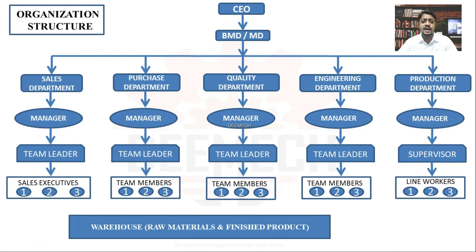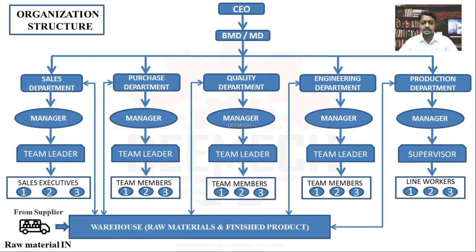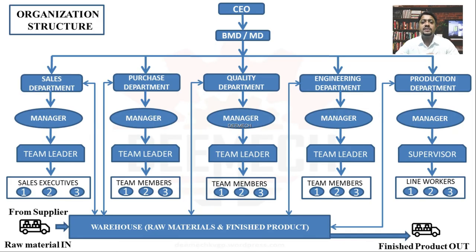The warehouse is divided into raw material warehouse and finished product warehouse, usually managed by the purchase department manager, though all other departments have access. Raw materials enter through suppliers; once the quality department approves them, the engineering department issues product drawings to production. The production department converts raw materials into finished products, which are stored in the finished product warehouse only after the quality check.